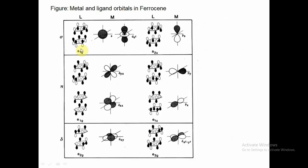For a1g of the cyclopentadienyl, the matching metal orbitals are s and dz². For a2u, the metal orbital is pz, forming pi bonding. For e1g, the matching metal orbitals are dyz and dxz. For e1u, the respective metal orbitals are py and px. For e2g, the respective metal orbital is dxy and dx²-y², forming delta bonding. For e2u, no suitable orbitals are available on the metal side.